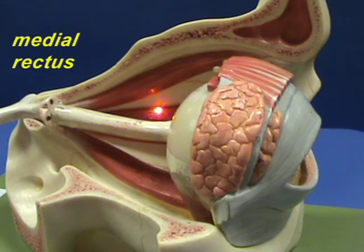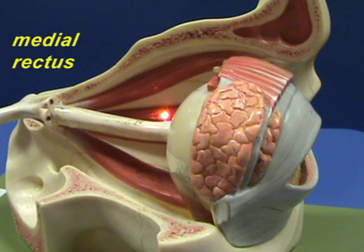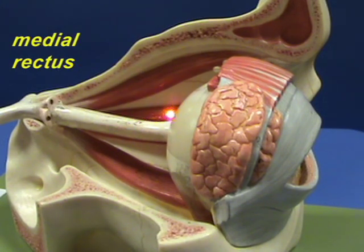The medial rectus muscle has an origin on the medial side of the common tendinous ring, behind the optic nerve, which is right over here, and inserts on the medial anterior half of the eyeball. The medial rectus muscle adducts the eyeball.